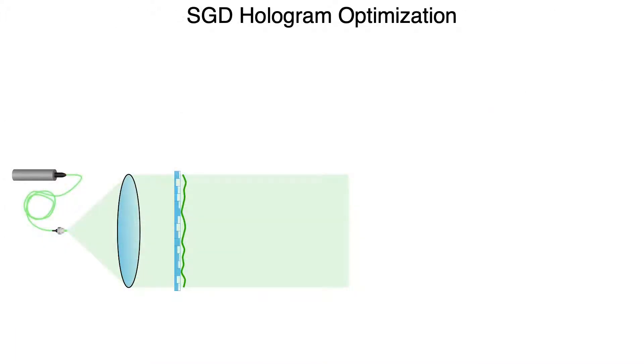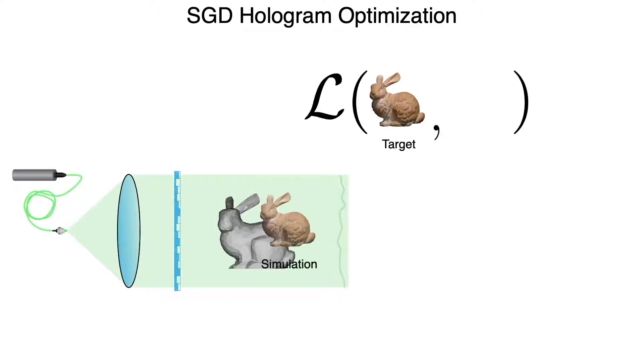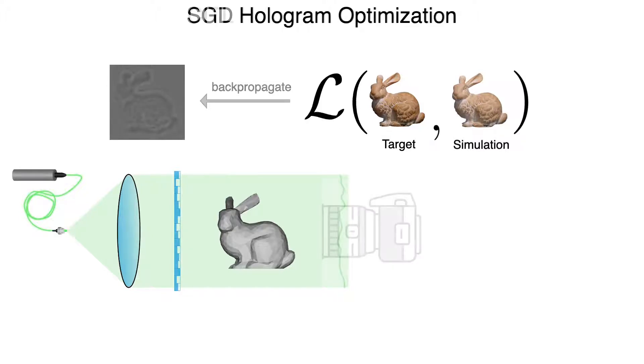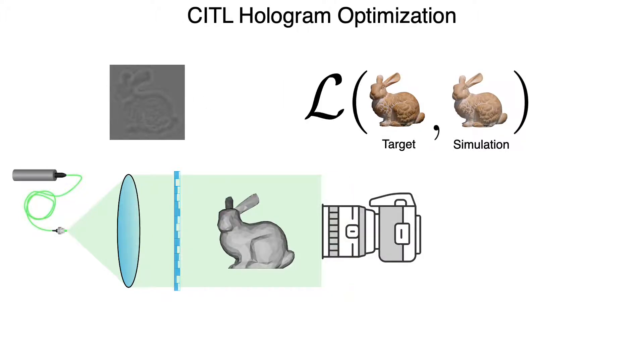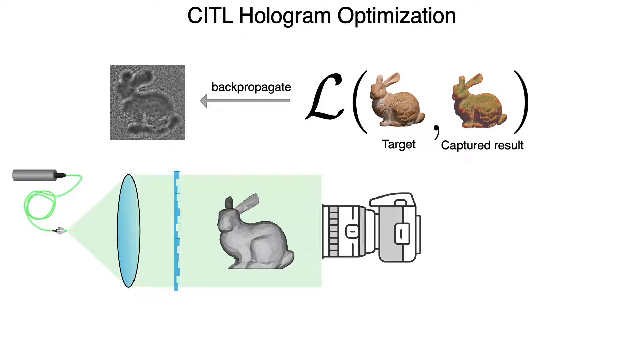Our SGD solver has the capability to account for this model mismatch. Typically, we simulate the observed image for a given SLM pattern, compare it with the target image, and back-propagate the error into the phase pattern. With our camera-in-the-loop procedure, we capture the image produced by the phase pattern with the camera, compare that image with the target, and back-propagate the error using gradients of a differentiable proxy light transport model back into the phase patterns.